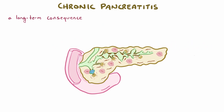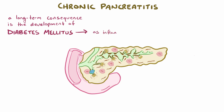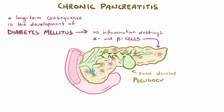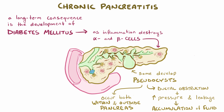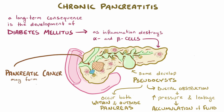A long-term consequence of chronic pancreatitis is the development of diabetes mellitus, which happens as the recurrent inflammation begins to damage the alpha and beta cells of the pancreas. In addition, some individuals develop pancreatic pseudocysts—in the context of chronic pancreatitis, often the result of ductal obstruction, which increases pressure, induces leakage, and results in accumulation of parapancreatic fluid in fibrous granulation tissue within or just outside the pancreas. Repeated inflammation can also give rise to pancreatic cancer on rare occasions.